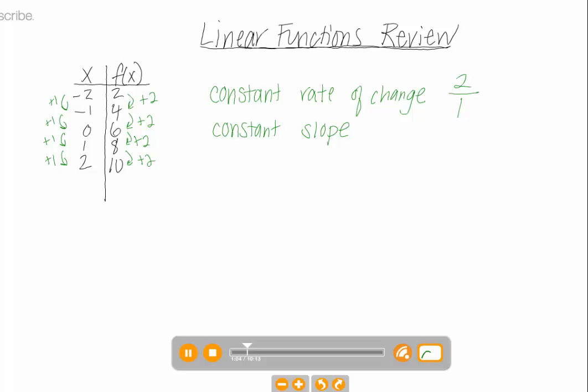Because this function is representing something with a constant slope, we know that it is linear. That's really the deciding factor of a linear function. We have to make sure that there's a constant slope.